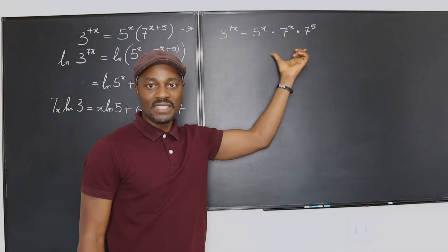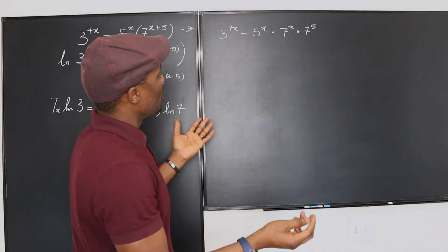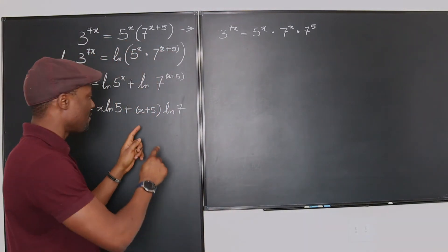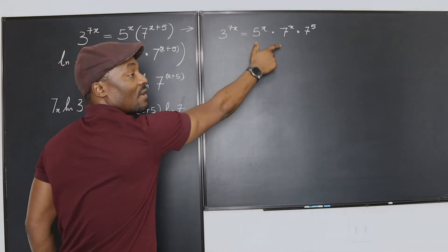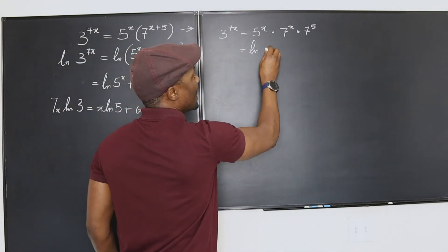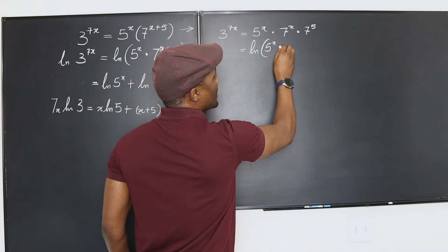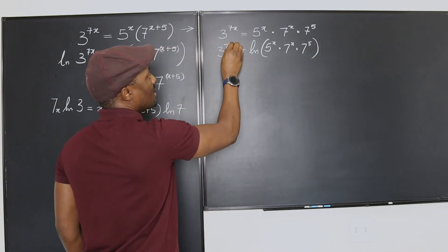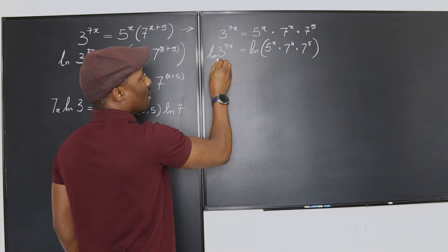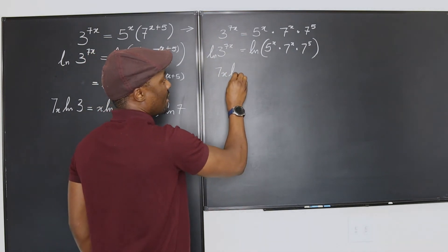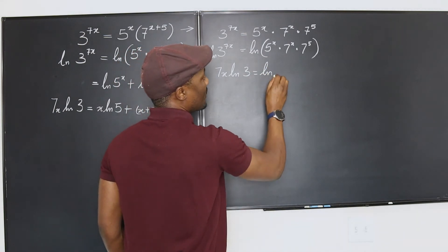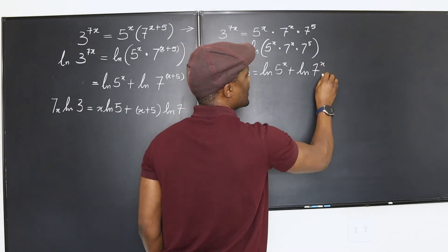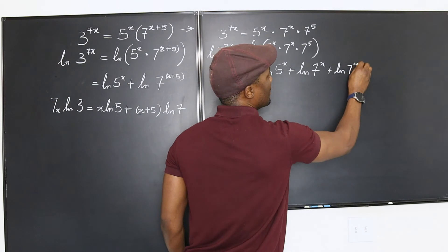And this would have made things a lot easier because now, what do we have? You can actually just introduce your natural log now because you wouldn't have this problem at the end. We already did it from the beginning. So this is another way. And this would now be equal to the natural log of 5 to the x times 7 to the x times 7 to the 5th, which will be 3 to the 7x. Natural log. Now, you can bring this down and say 7x ln 3 equals ln 5 to the x plus ln 7 to the x plus ln 7 to the 5th.